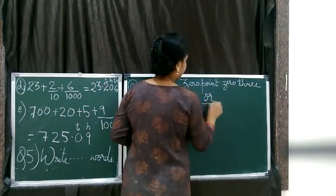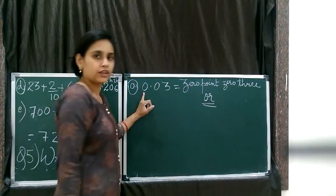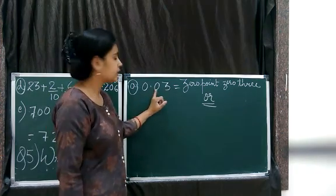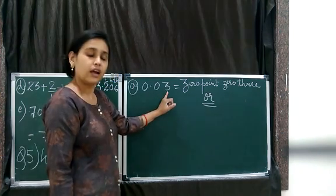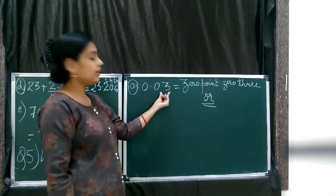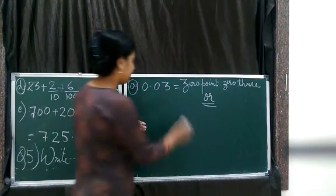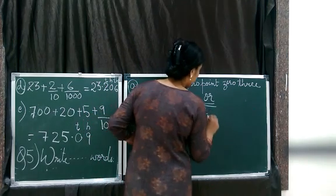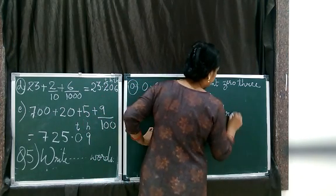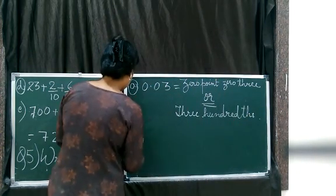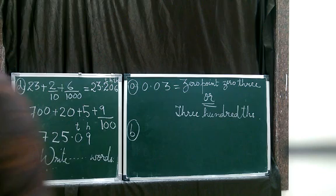So how do we read the numbers? 0.03. 0 places we don't say, so directly 3 hundredths. That means 3 hundredths.